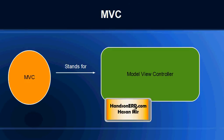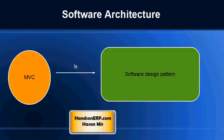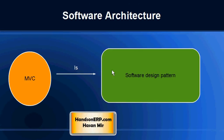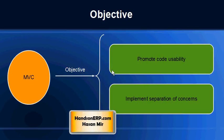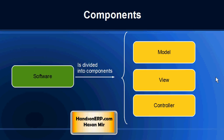So first thing first, MVC stands for Model View Controller and it is a software design pattern or a software development methodology. The main objective of Model View Controller design is to promote code usability and also to implement separation of concerns. What exactly we mean by implementation of separation of concerns, we will discuss that in coming slides.